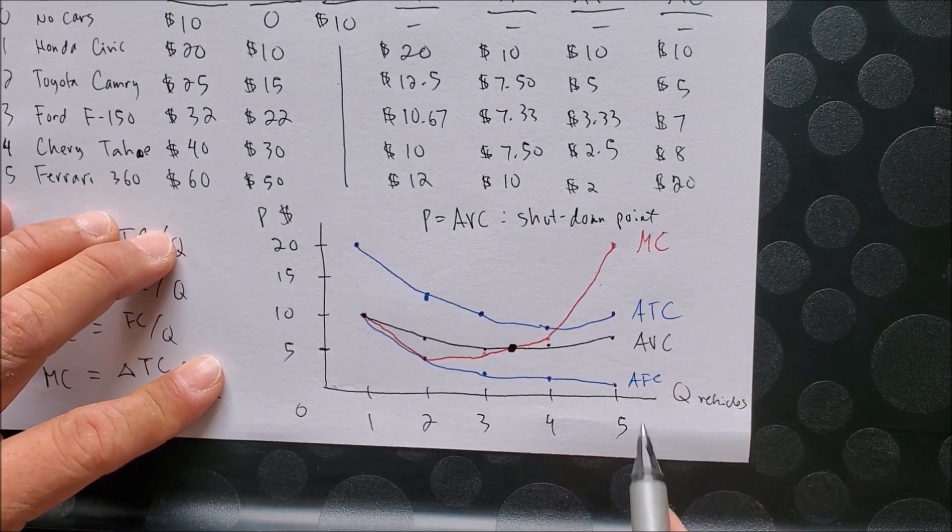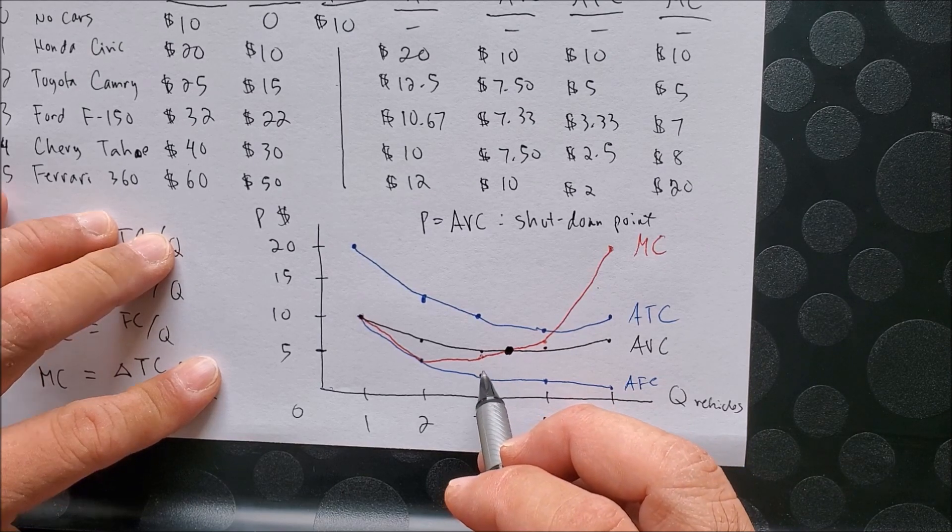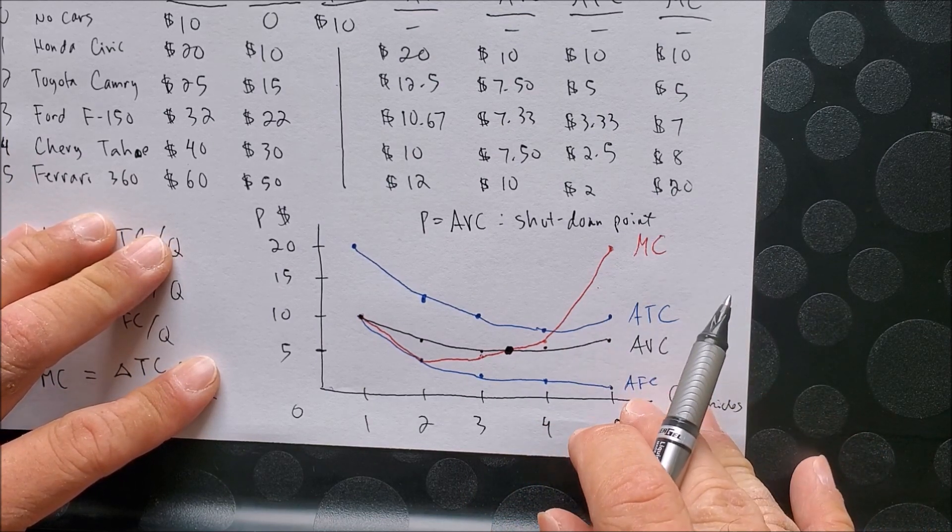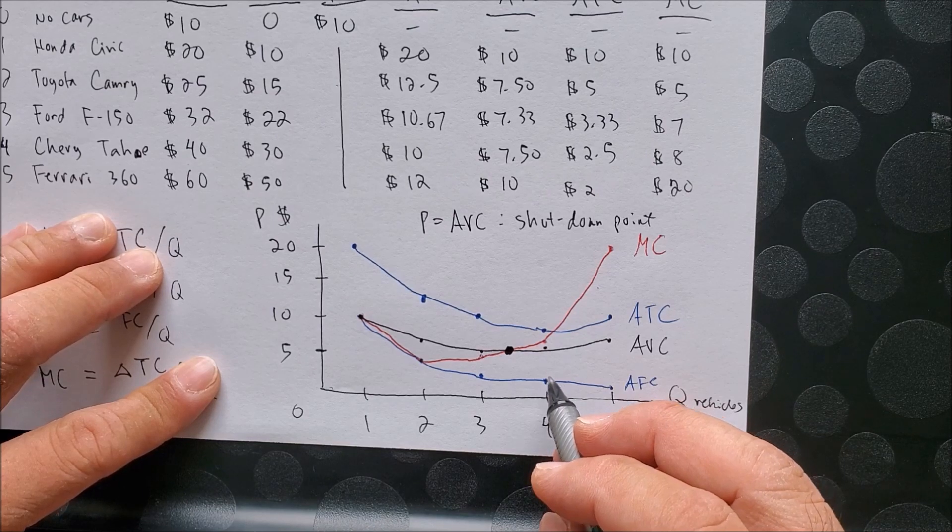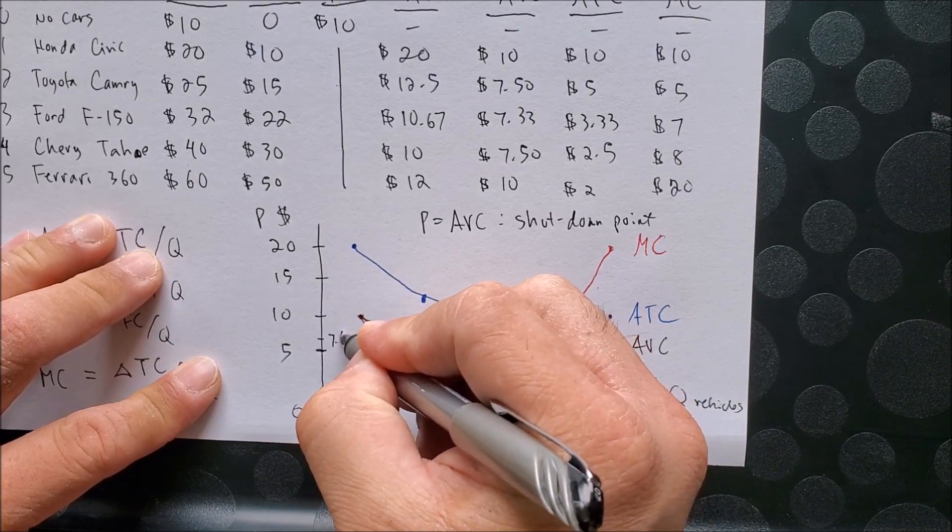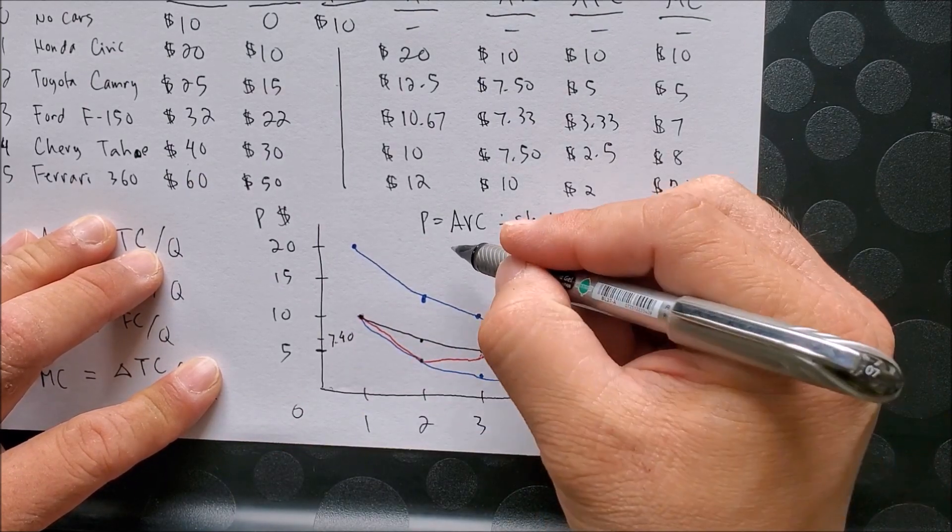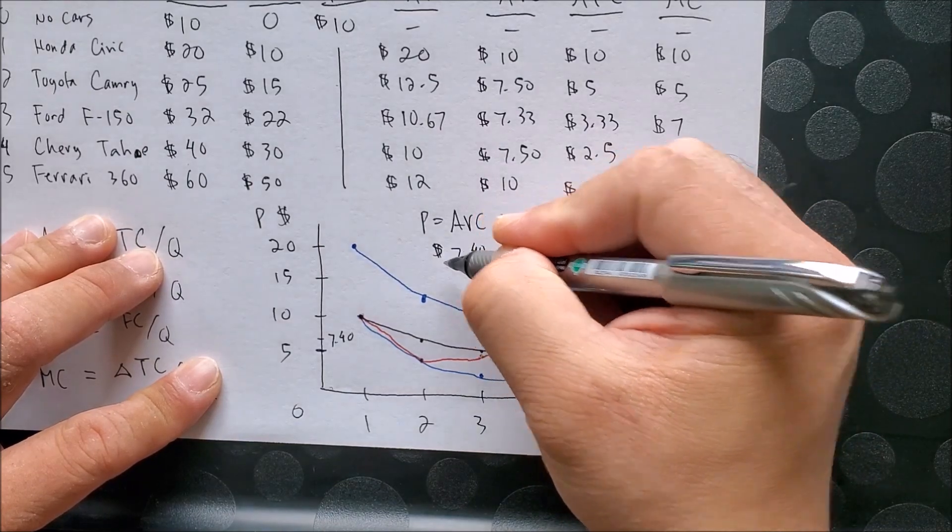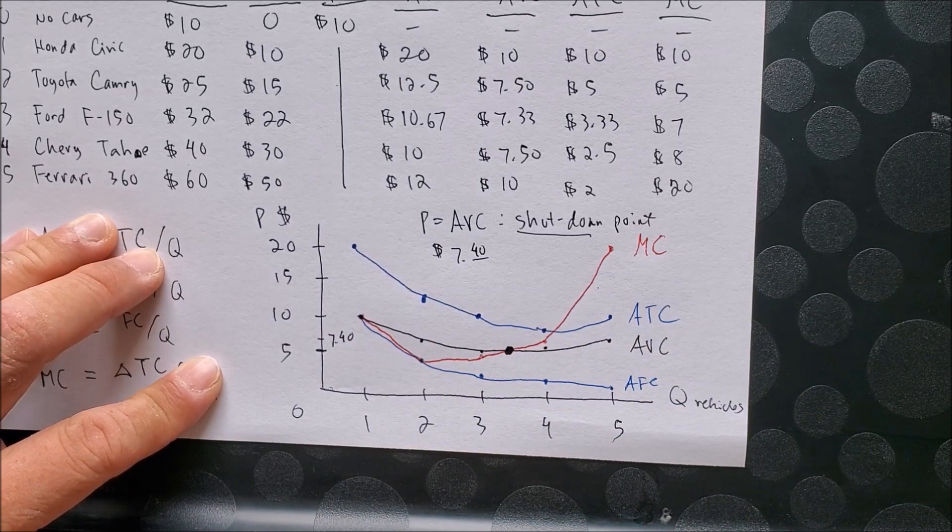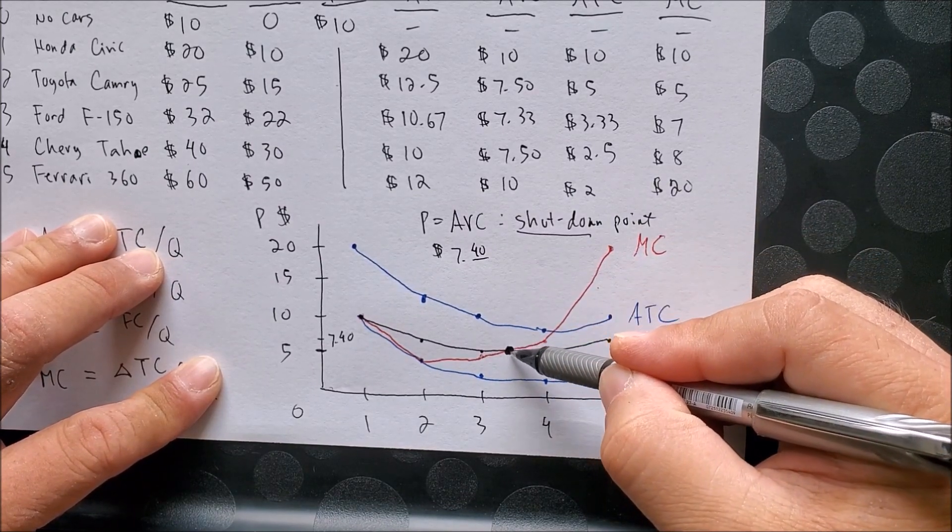The shutdown point. So this price, in between 3 and 4, looks to be more around, let's see, 3 vehicles, 7, so maybe around $7.20 something or so, or even 7, let's put our $7.40. So if you are going to charge $7.40 for your business, you might as well shut down your business. And this makes sense because if you are looking at this point of P equals AVC, you have enough revenue, which would then be, in this case, let's say 3.5 times 7.4, you have enough revenue to pay for your worker, or for you, the labor.